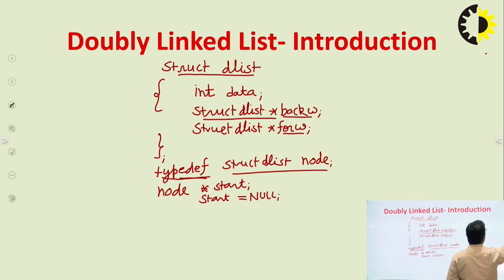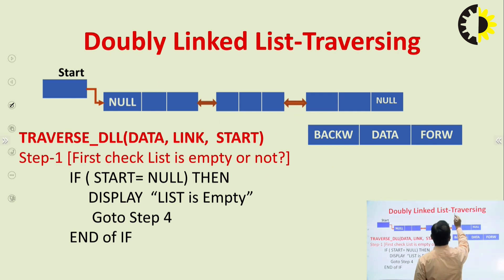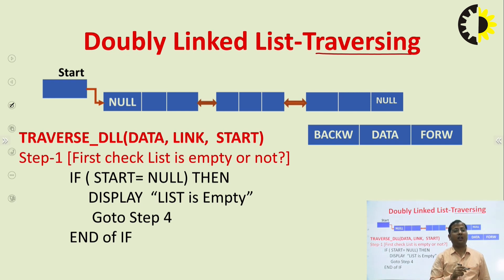Now, doubly linked list traversing — we have to perform traversing in the doubly linked list. Traversing means we have to access the value of each node at least once. We can print it, we can access it to find the sum of all the nodes, or we can use it to count the total number of nodes in the doubly linked list.